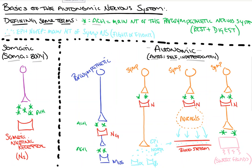One key take-home point: the first receptor in every system is always a nicotinic receptor, and it is always acetylcholine that interacts with it. I used to get jumbled up forgetting which had the muscarinic receptor, and the alphas and betas, and in which order — but if you know nothing else, always remember the first receptor in every system is always a nicotinic receptor that responds to acetylcholine, and it will really go a long way.